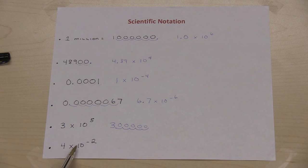For 4 times 10 to the minus 2, I'll take my 4, and because it's a negative exponent, that means that the decimal is going to be moving this way, so I have a number less than 1.